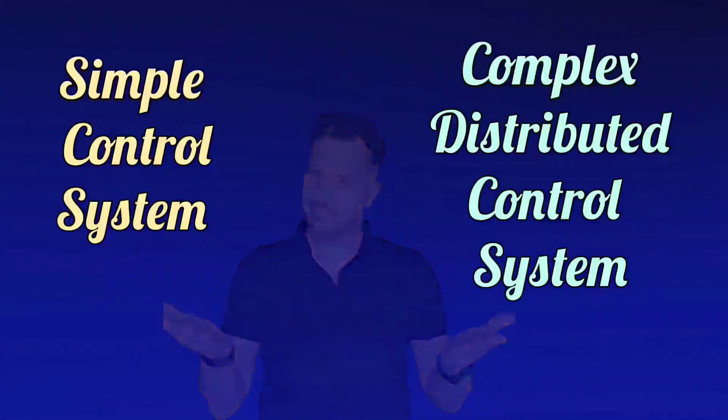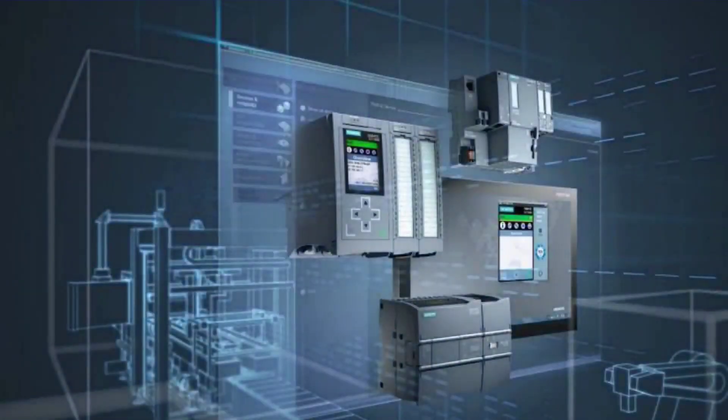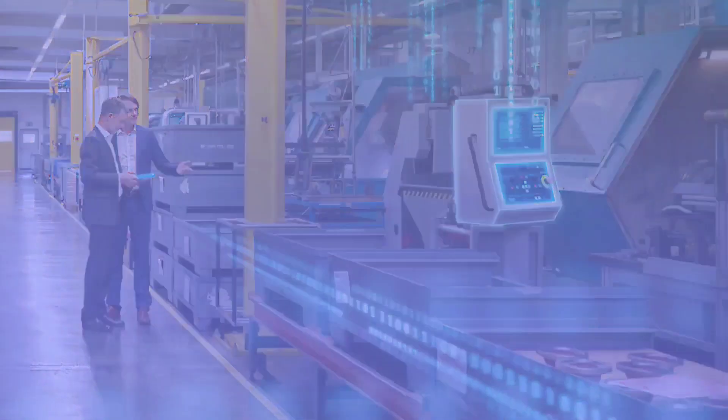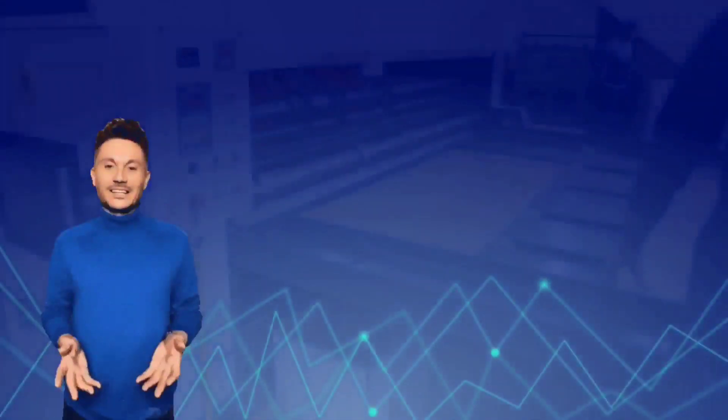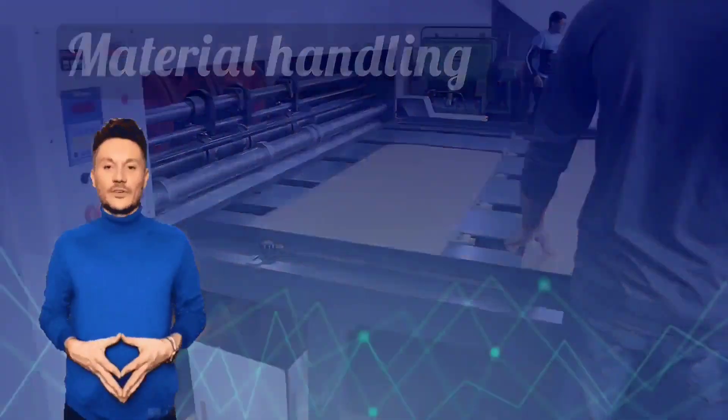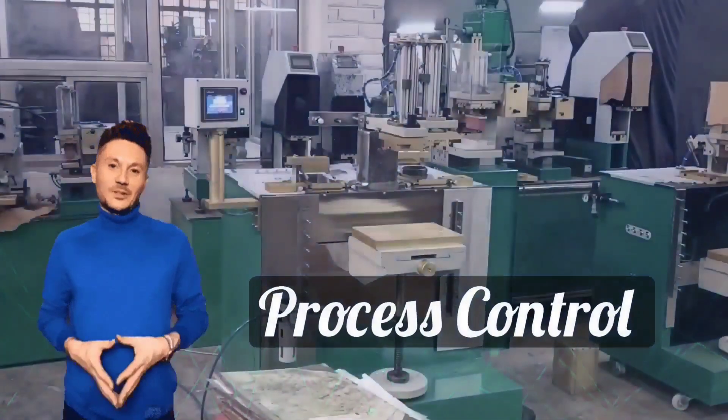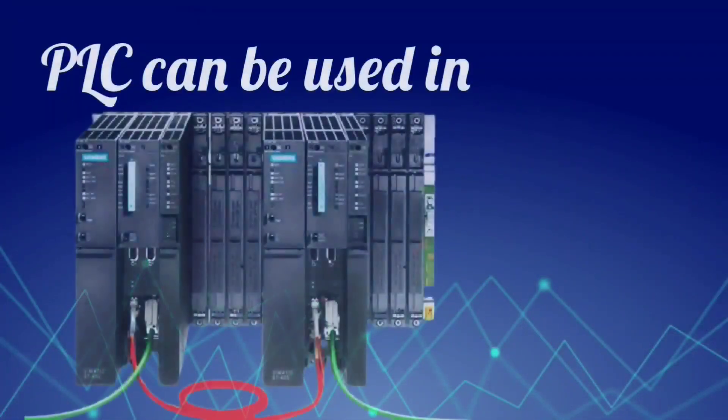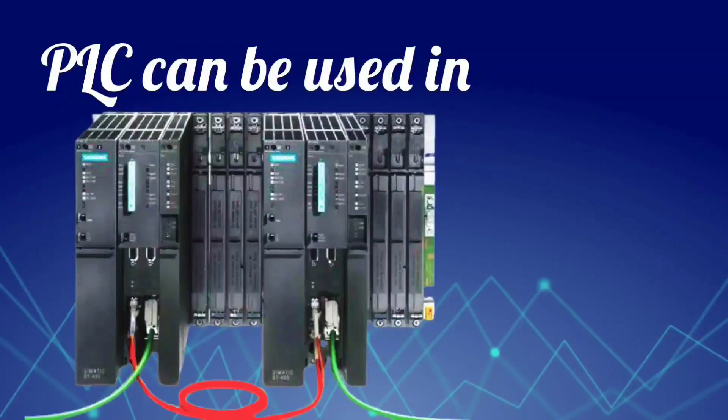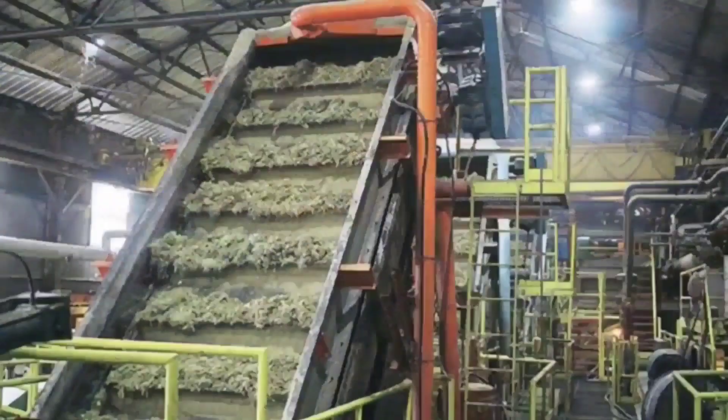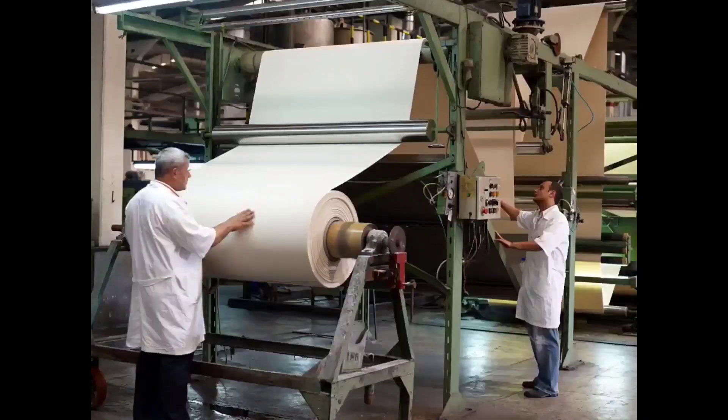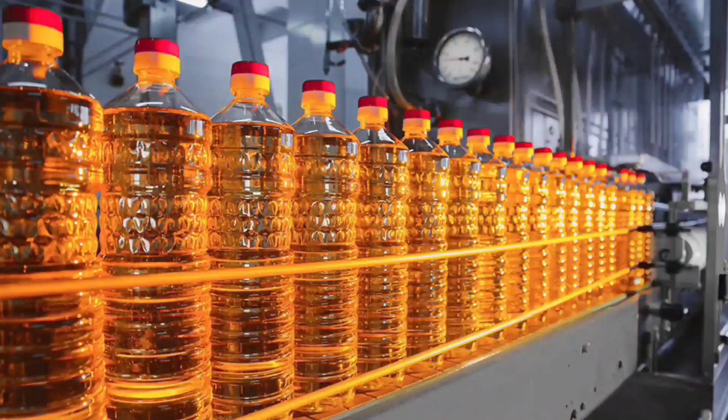PLCs are used to control all types of systems, whether it is a simple control system or a complex distributed control system. PLCs are used in such systems where automation of multiple processes happens at different places. For example, material handling, manufacturing, process control. Let me explain you it in simple language: PLCs are used in almost all industries like power plant, sugar mill, chemicals and pharmaceutical, paper industry, food processing, and many more.